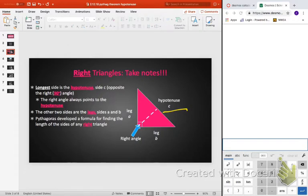So hypotenuse is the longest side of the right triangle. The right angle always points to the hypotenuse. So even if my triangle was in a different position, that's my right angle, it's pointing to the hypotenuse. The other two sides are legs, side A and side B. It does not matter which is A, which is B, as long as the legs are side A and side B.